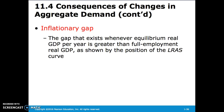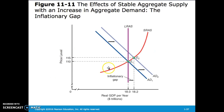An inflationary gap is what happens in the opposite event. When aggregate demand shifts outward or increases, we have an increase in the price level along the short-run aggregate supply curve, as well as an increase in real GDP per year. However, in the long run, it should contract back to the long-run aggregate supply levels, and the difference between what we expect in the long run and what we have in the short run is where we find the inflationary gap.